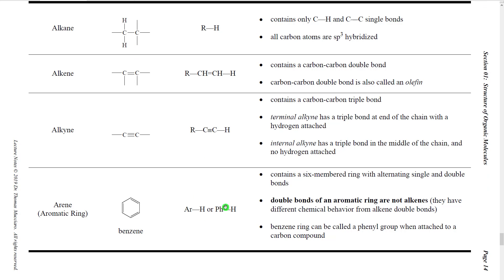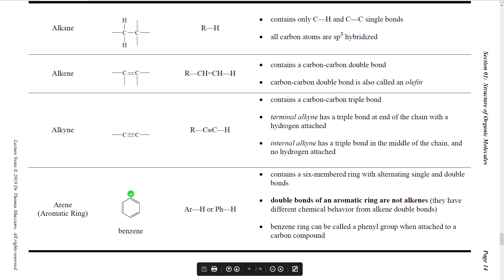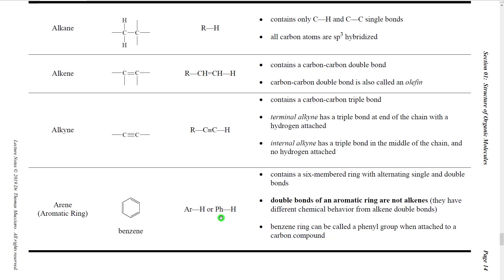The last type of hydrocarbon group is called an arene or aromatic ring. The most typical example is benzene — a ring of six carbons with alternating double bonds around the ring and one hydrogen attached to each carbon. Benzene is a structure and name you must memorize; we will use it a lot. Benzene rings can be abbreviated as Ar–H, and when attached to something else, this ring is often called a phenyl ring. So benzene is a phenyl ring with a hydrogen directly attached.